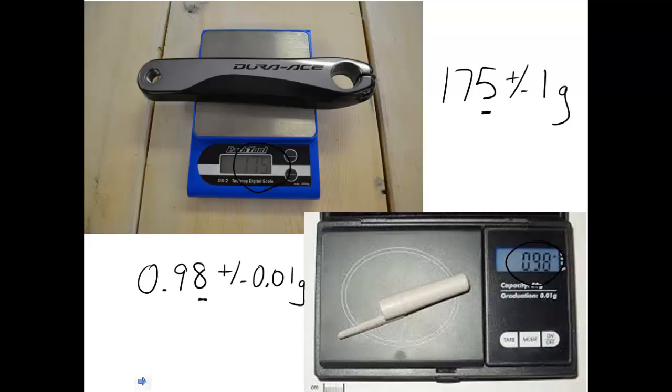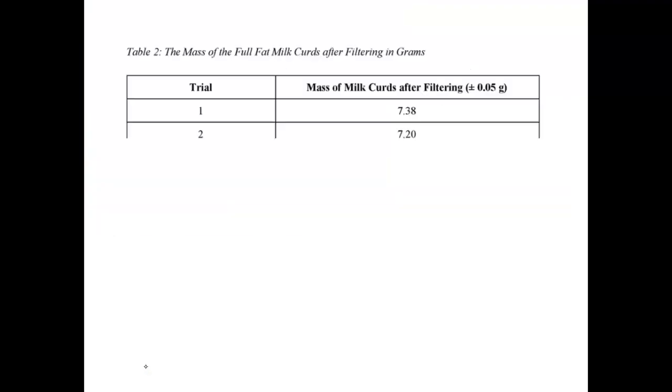And then so finally, if you're taking several measurements, you're doing multiple trials in your lab report, how you would do this, because, of course, you're going to have a nice clear title. And then you can just record the uncertainty up here at the top of the column.